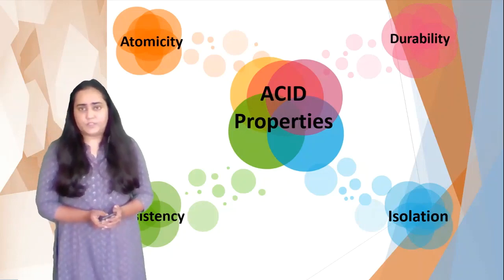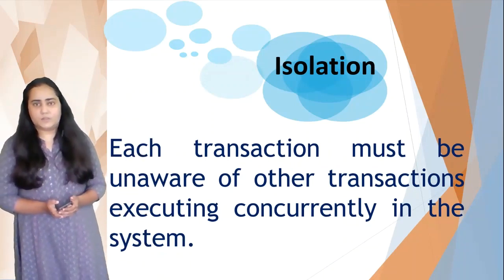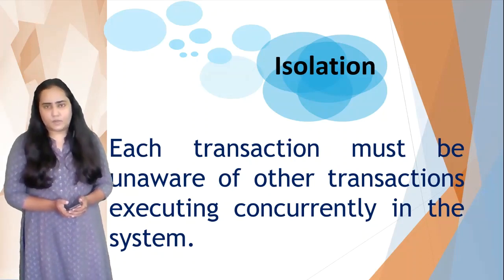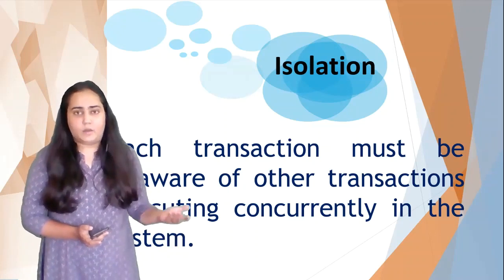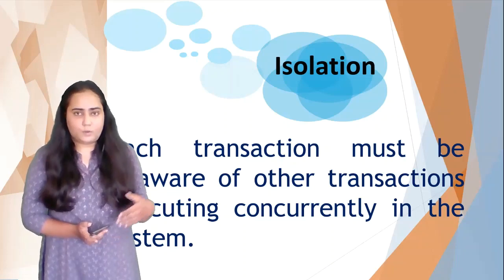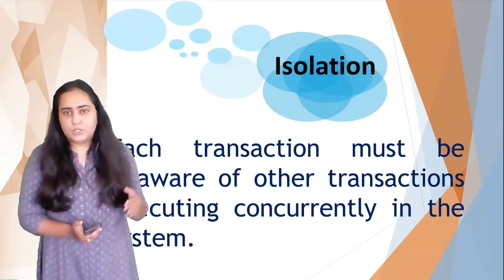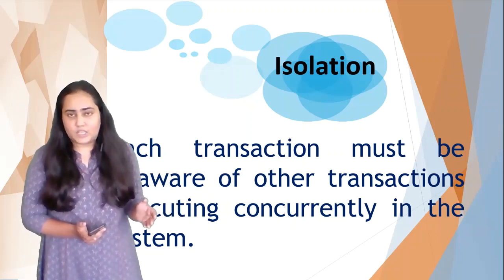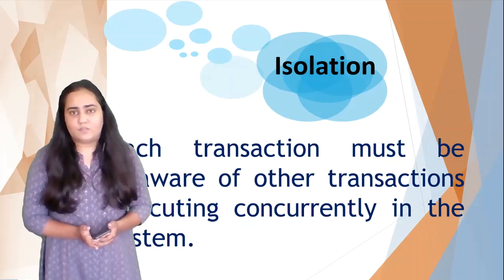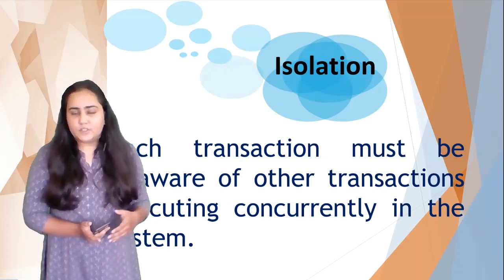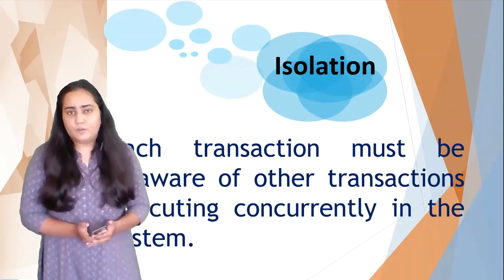The next property is Isolation, where each transaction in the system is unaware of other transactions occurring concurrently. In practical terms, when you are booking a ticket or performing a banking transaction, you should not be exposed to the fact that somebody else is performing a transaction at the same time. I'll cover the different levels of isolation once we've covered serializability, but for now the definition is sufficient.